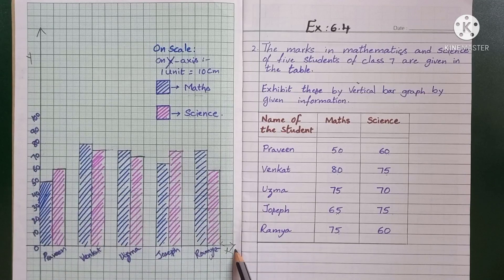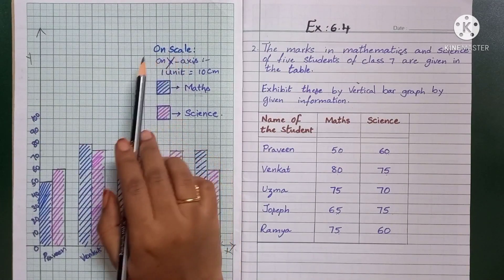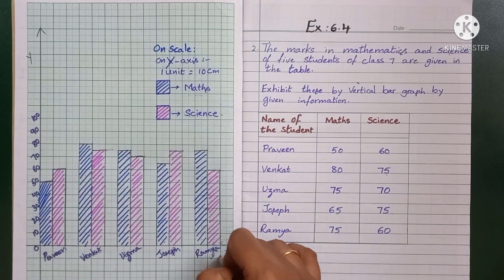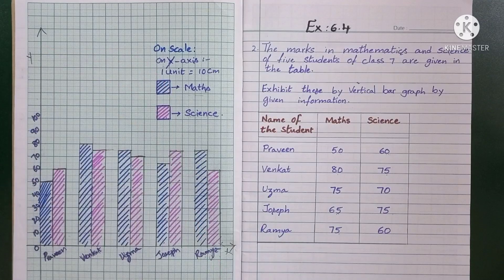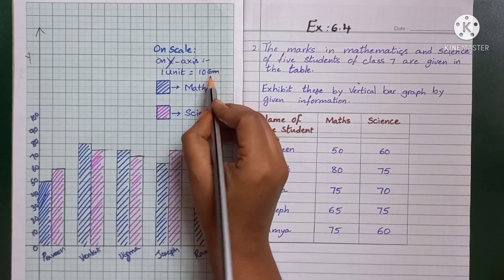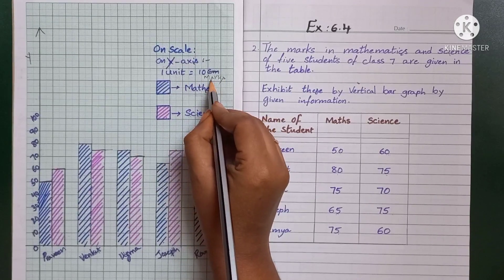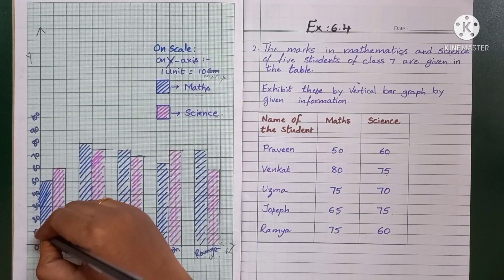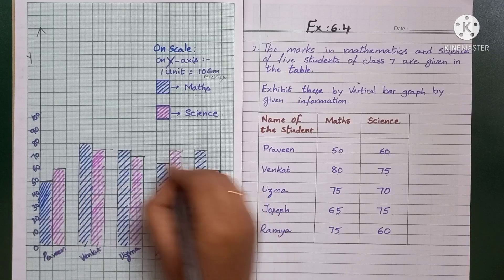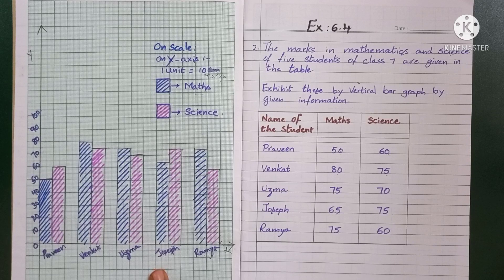On the x-axis we take names of students, and on the y-axis we take marks. On the scale on y-axis, one unit represents 10 marks — from 0 to 10, 10 to 20, and so on up to 100 marks. We located the marks and drew the double bar graph. This is how you have to draw a double bar graph. Understood, children.